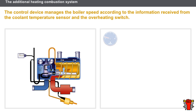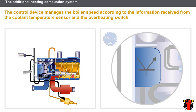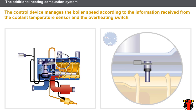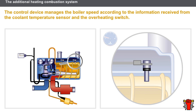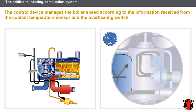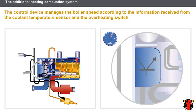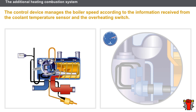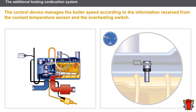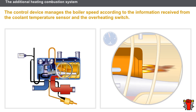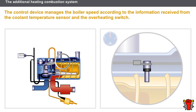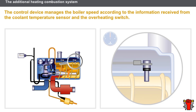Let us look at the adjustment operation. The adjustment is handled by the following components: the control device, the coolant temperature sensor, and the overheating switch. The overheating switch is a negative temperature coefficient type thermistor located in the boiler close to the combustion chamber. The overheating switch informs the control device of an excessive coolant temperature close to the heating unit. The temperature sensor continually informs the control device of the development of the engine temperature. The control device manages the boiler speed in accordance with the information received from the coolant temperature sensor and from the overheating switch.